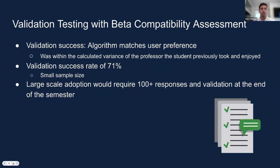After that, we wanted to test our algorithm, so we came up with a beta compatibility assessment and sent it out to students. We received over 20 responses, and we asked each student to share information about their previous professors and courses and whether they enjoyed them. We believed that our algorithm was successful if it returned the most compatible professor for the student, or if it was within a calculated variance of the previous professor that the student enjoyed taking. We had a success rate of 71%, and even though it was a small sample size, we were satisfied with the results and concluded that we could move forward with our algorithm.